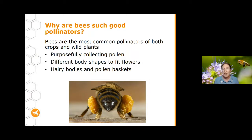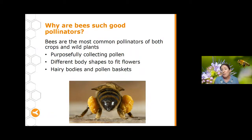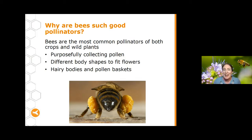So why are bees such good pollinators? Bees are the most common pollinators of both crops and wild plants. First, bees are out there purposely collecting pollen — most other pollinators just end up getting pollen on them incidentally, whereas bees are really going for that pollen. There are also lots of different species of bees with different body shapes, so they tend to fit a whole range of different flowers — a bee for every job. And bees have hairy little bodies that pick pollen up, plus pollen baskets on their legs where they collect it. You can see this bee here with his pollen baskets pretty full.